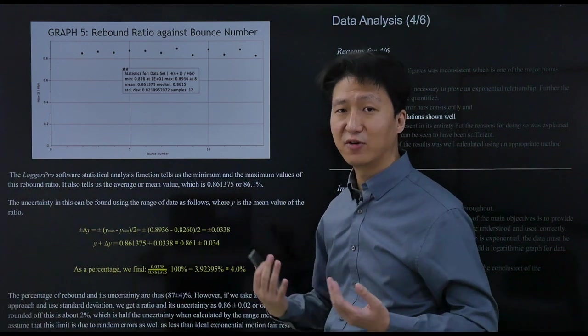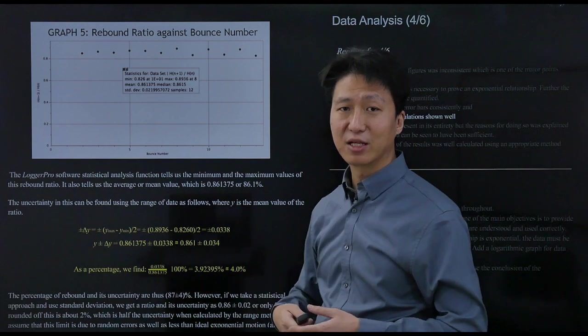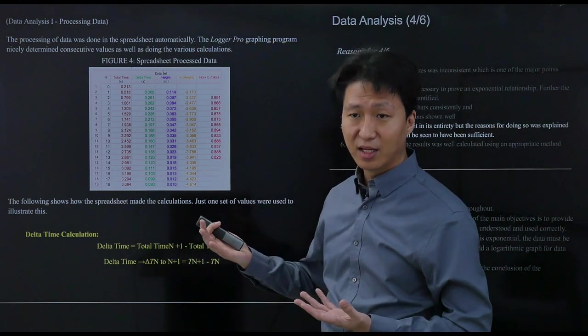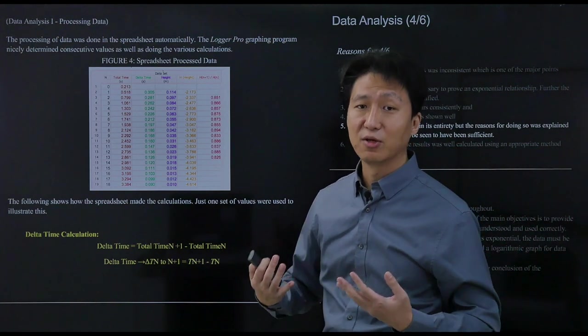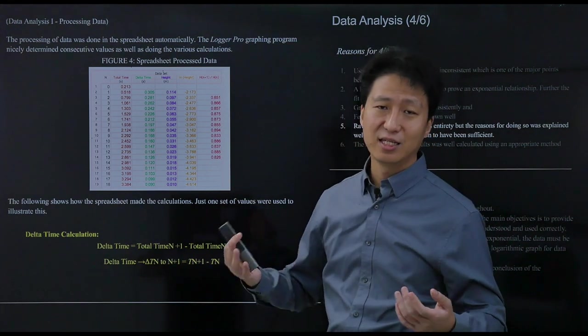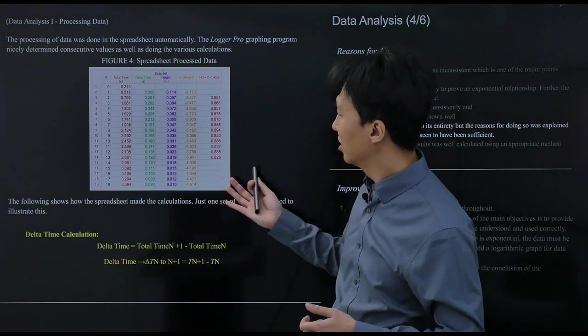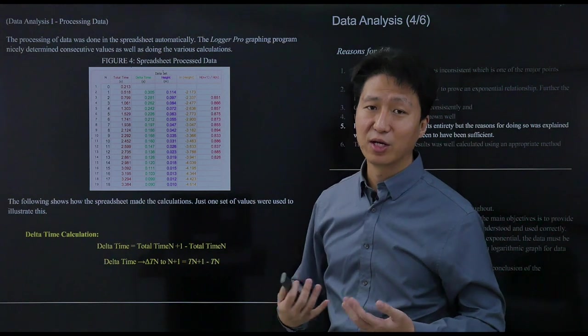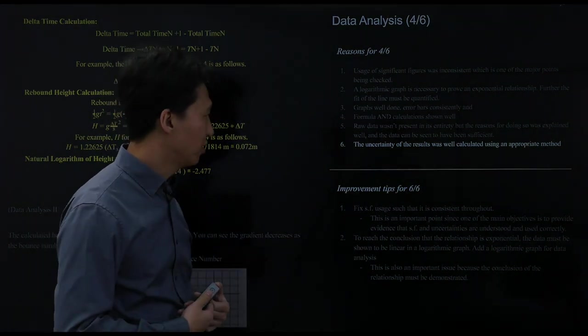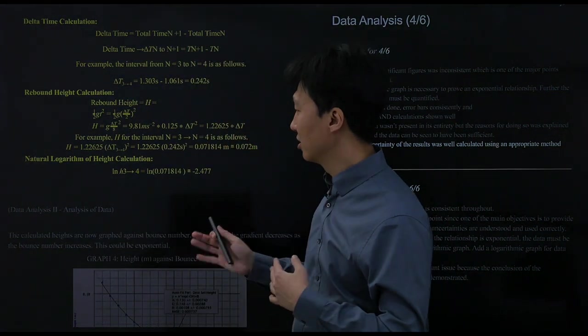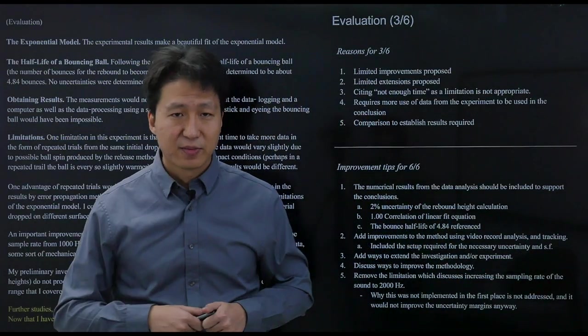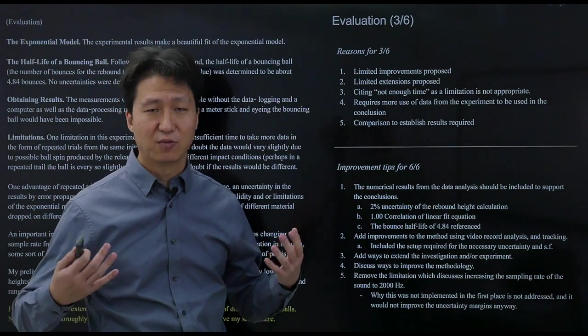One thing they also did well is they presented all the raw data. But in some cases, when you cannot present all the raw data, they showed examples of the data and why it cannot all be shown. In this case, it had 6,000 data points, so they showed some of it and showed how it was processed, but not in a way that is boring or detracts from the flow. And of course, you have to calculate the uncertainties. The uncertainties of the results were enough. Other than the significant figures issues, all were well done. You can see that they did do their work.